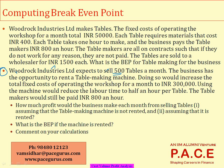Using the machine would reduce the labor time to half an hour per table. Since table makers are still paid 800 an hour, that's 400 per table for labor. Combined with the 400 material cost, the variable cost per table becomes 800. The revised break-even is therefore 300,000 divided by (1,500 minus 800), which is 300,000 divided by 700.